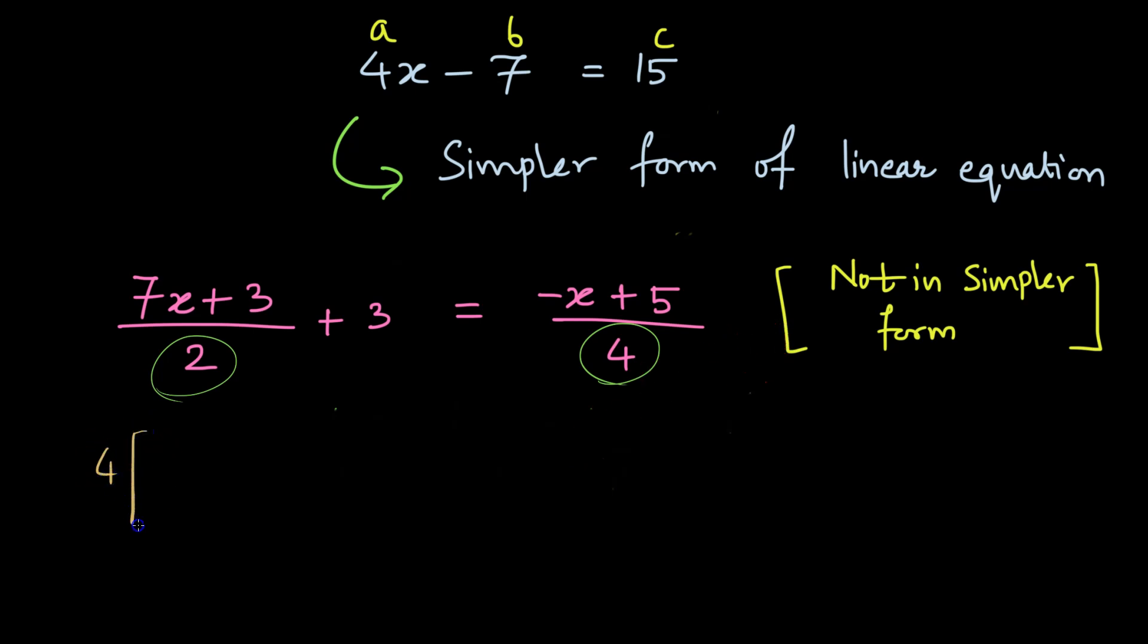So what we are going to do is multiply the whole left hand side by 4. So 7x plus 3 divided by 2, in the bracket we will also have plus 3 equal to 4 times minus x plus 5 divided by 4.